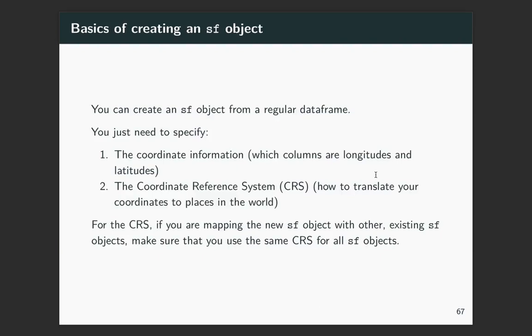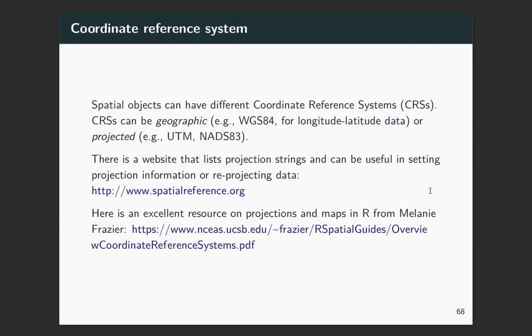Alright, so you can create an SF object from a regular data frame. All you need to do is specify the coordinate information. So you need to tell it which of the columns that you have represent longitude and which represent latitude. And then you also need to give it the coordinate reference system. And this is how to translate your coordinates to places in the world. If you're mapping several SF objects, you need to make sure that you use the same CRS for all of those objects.